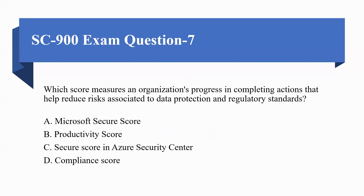Moving towards the next question: which score measures the organization's progress in completing actions that help reduce risk associated with data protection and regulatory standards? Options are: A — Microsoft Secure Score, B — Productivity Score, C — Secure Score in Azure Security Center, D — Compliance Score. The correct option is D, Compliance Score.